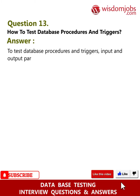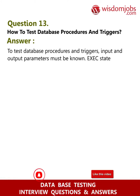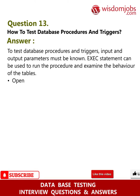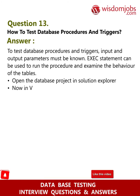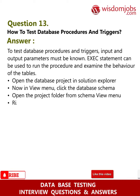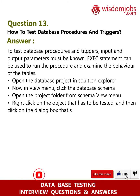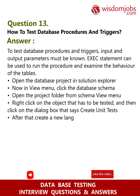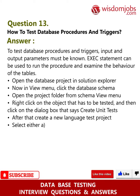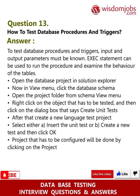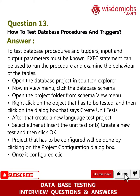Question 13: How do you test database procedures and triggers? Answer: Input and output parameters must be known. The exact statement can be used to run the procedure and examine the behavior of the tables. Open the database project in Solution Explorer, then in the View menu click the database schema. From the schema view, right-click the object to be tested and click the dialog box that says 'Create Unit Tests.' Create a new language test project, select either insert the unit test or create a new test, then click OK. Configure the project via the project configuration dialog box and click OK.